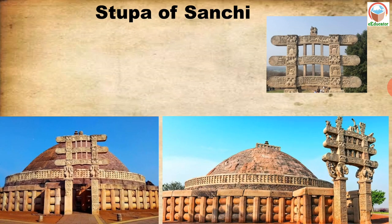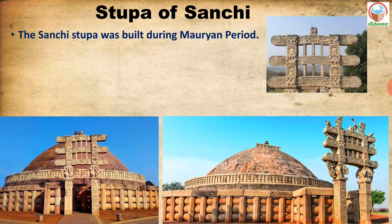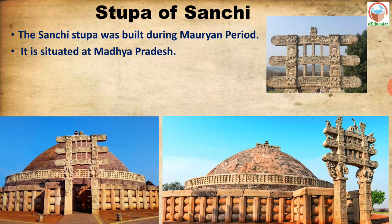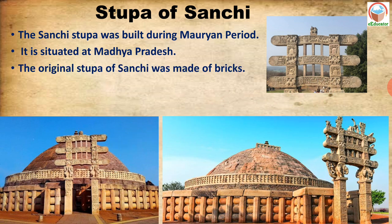Now let us look at information about the Stupa of Sanchi. You can see photographs of the Sanchi Stupa. The Sanchi Stupa was built during the Mauryan period, during Ashoka's rule. Ashoka belonged to the Mauryan dynasty. The Sanchi Stupa is situated in Madhya Pradesh.